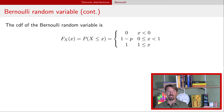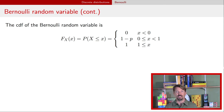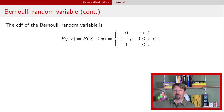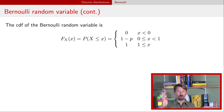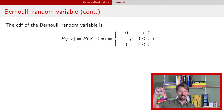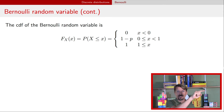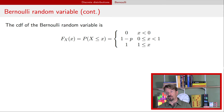The cumulative distribution function for a Bernoulli random variable is pretty boring. It's going to be zero all the way up until zero, then it jumps up to one minus p and stays flat until you get to one, where it jumps up to one. So really a pretty boring cumulative distribution function.